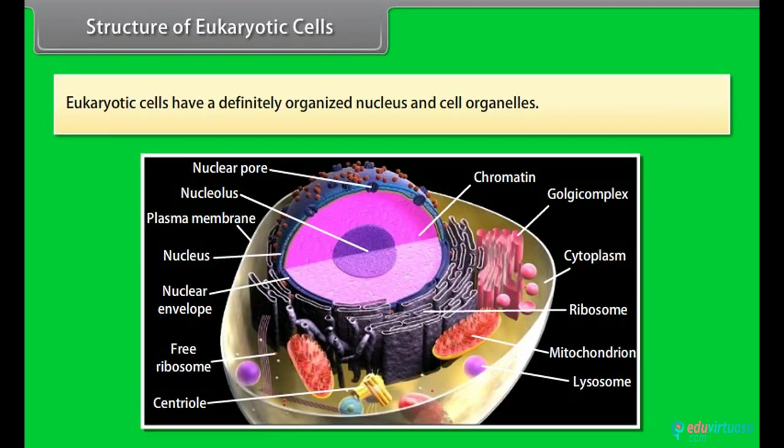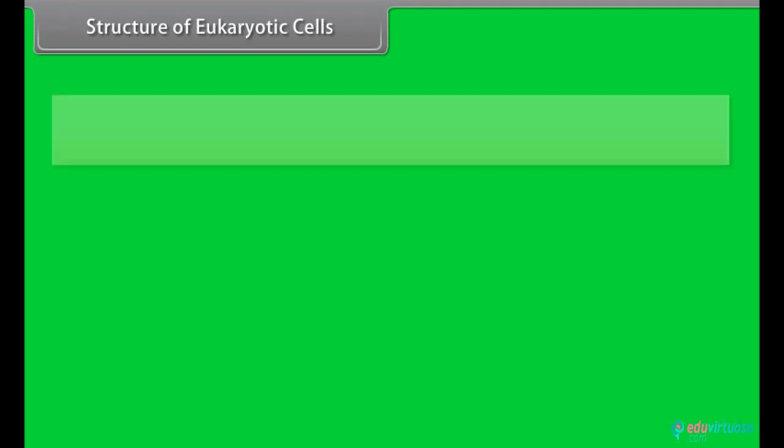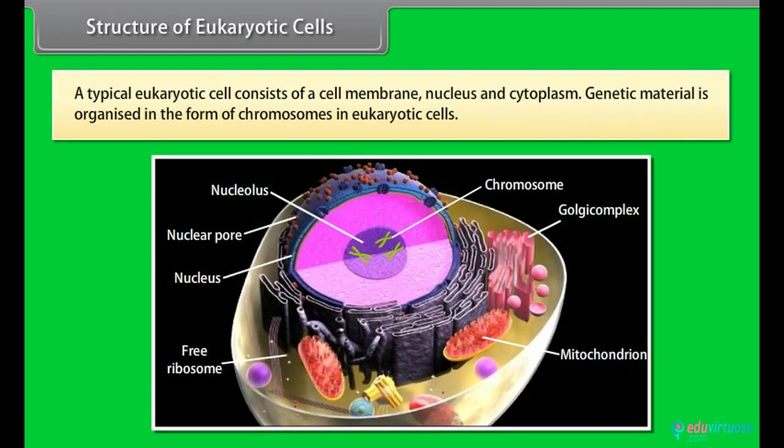Structure of eukaryotic cells: Eukaryotic cells have a definitely organized nucleus and cell organelles. These types of cells are found in many groups of algae except cyanobacteria, fungi and other plants and animals. A typical eukaryotic cell consists of a cell membrane, nucleus and cytoplasm. Genetic material is organized in the form of chromosomes in eukaryotic cells. Eukaryotic cells also have cytoskeletal structures.